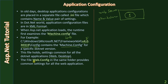The web.config file in the same config folder provides common settings for all web applications. So while machine.config provides settings common for both web and desktop applications, the web.config file provides settings common to web applications only.